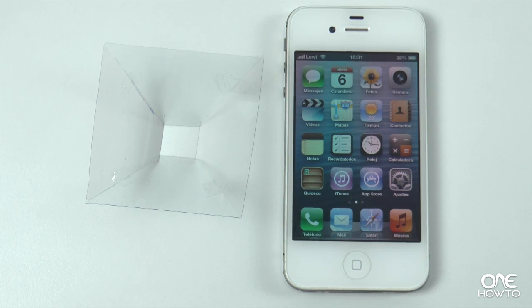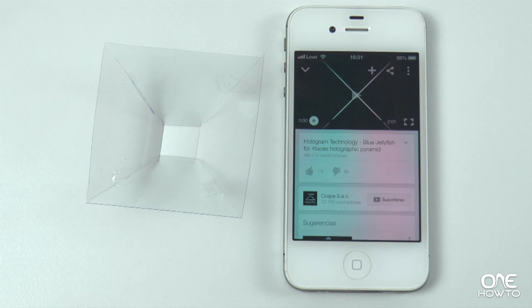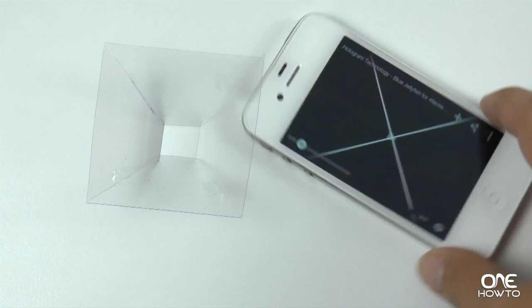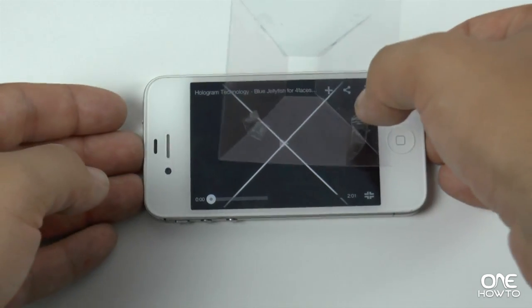So finally, you need to find a video which is specifically designed for holograms. You can find a good example in the description below this video. Now you need to make the video full screen, and you need to place the plastic shape you have created exactly in the center of your smartphone screen.